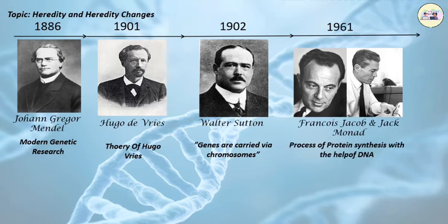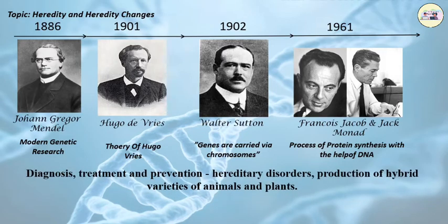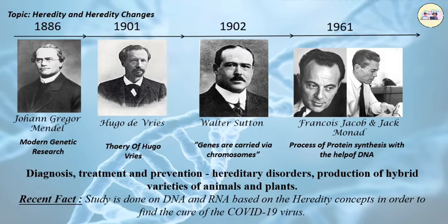In 1961, different geneticists Francisco Jacob and Jacques Monod proposed a model for the process of protein synthesis with the help of DNA in bacterial cells. The science of heredity is useful for diagnosis, treatment and prevention of hereditary disorders, and production of hybrid varieties of animals and plants. Recent studies on DNA and RNA based on the heredity concept are being done to find the cure of COVID-19 virus.